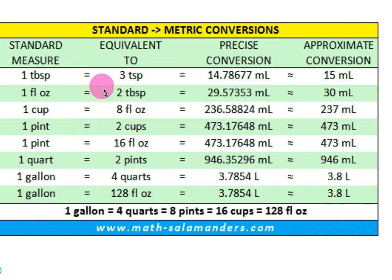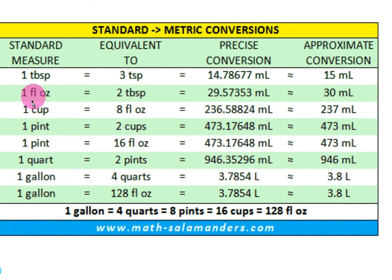There are two tablespoons in an ounce. Now right off the bat, I'm going to quiz you guys. How many teaspoons do you think are in an ounce? Six — yes. If there's three teaspoons in a tablespoon and two tablespoons in an ounce, then there are six teaspoons in an ounce. So if you were to take a spoon out of your drawer, fill it up with water six times and dump it somewhere, that would give you an ounce.